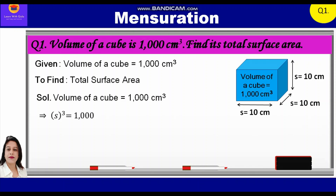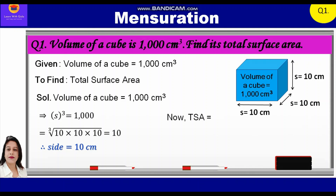This implies S³ is equal to 1000. We will factorize 1000 as 10 × 10 × 10. The cube root of this is equal to 10. Therefore, the side of this cube is equal to 10 cm. Now, total surface area is equal to 6S². Substituting the value of S, we get 6 × 10² = 6 × 100 = 600 cm². So the total surface area of this cube is equal to 600 cm².